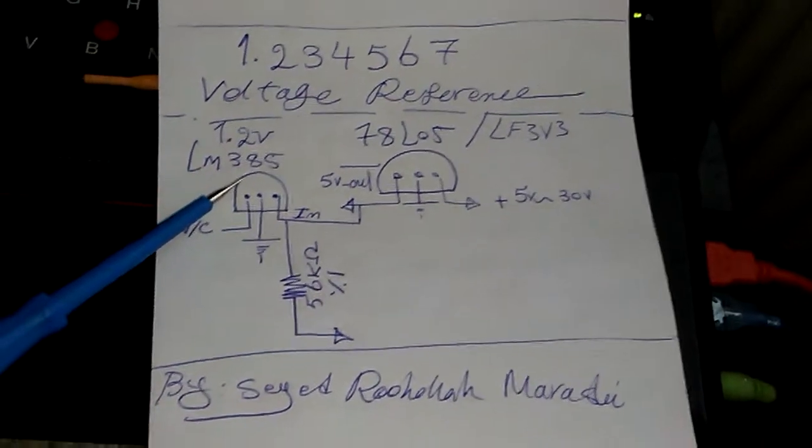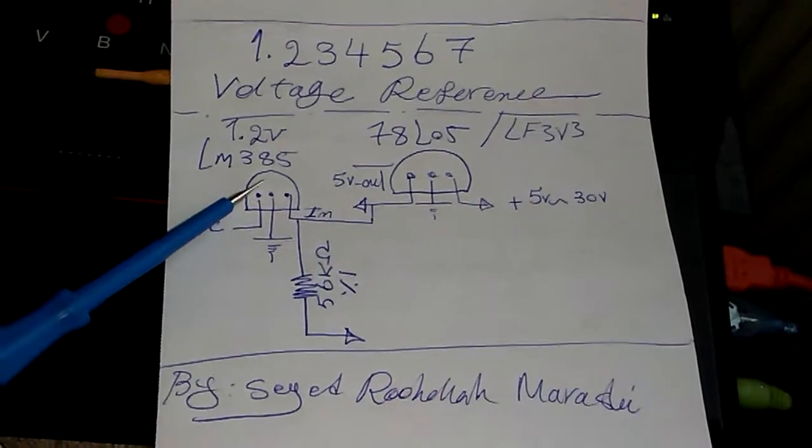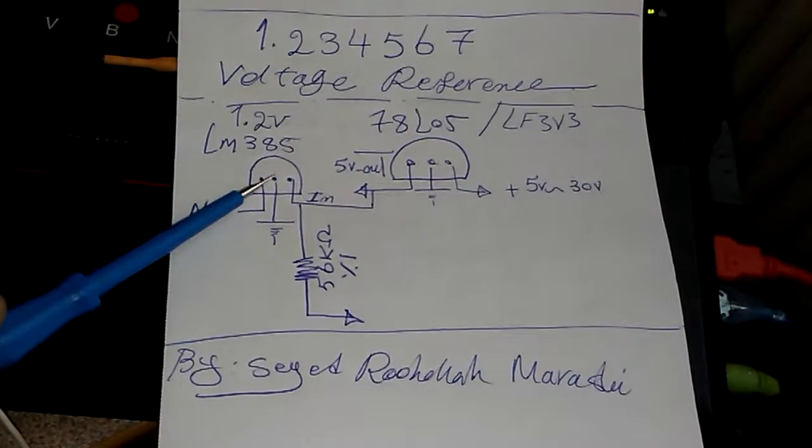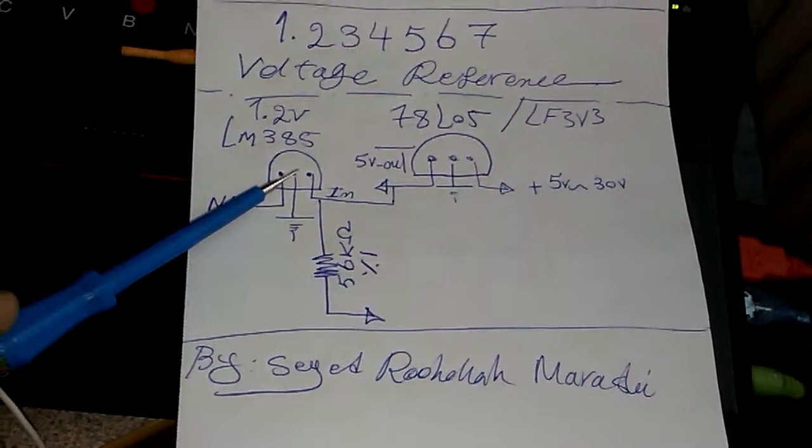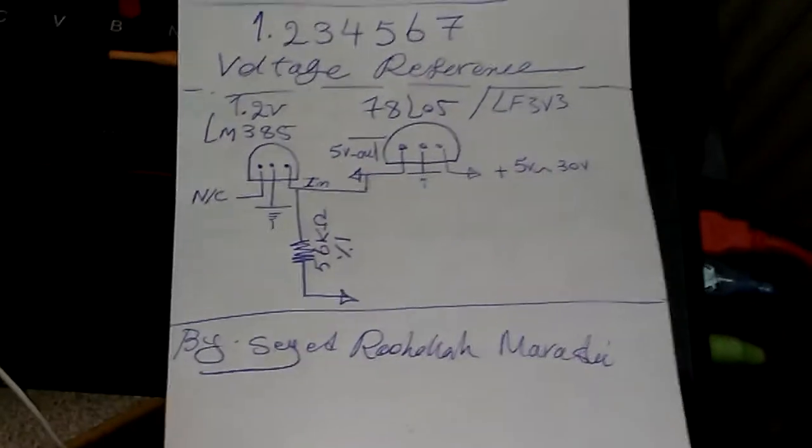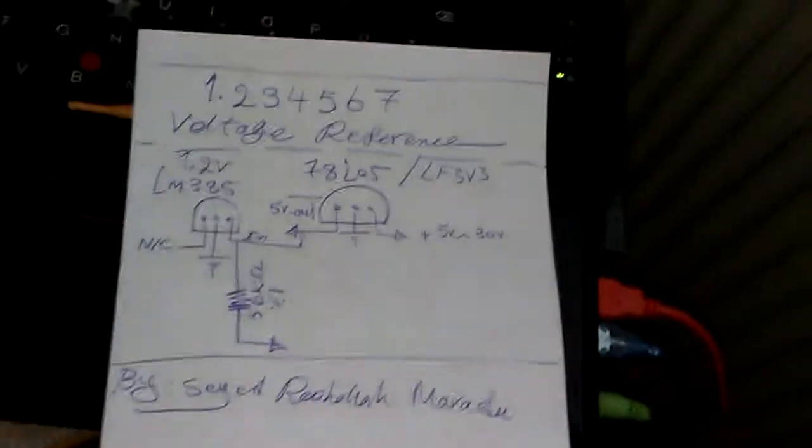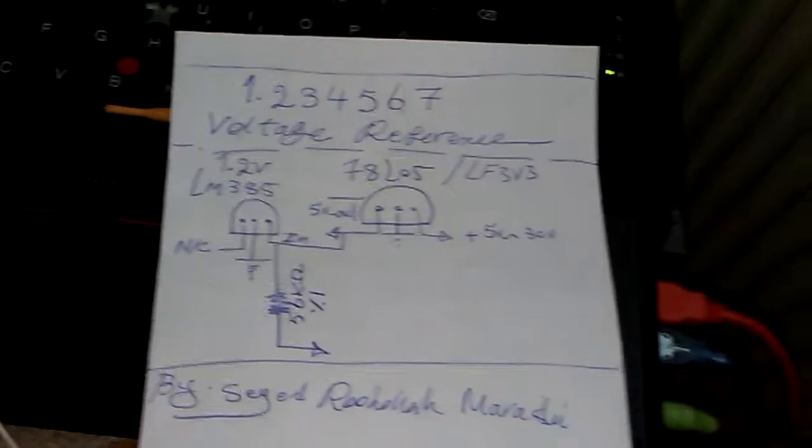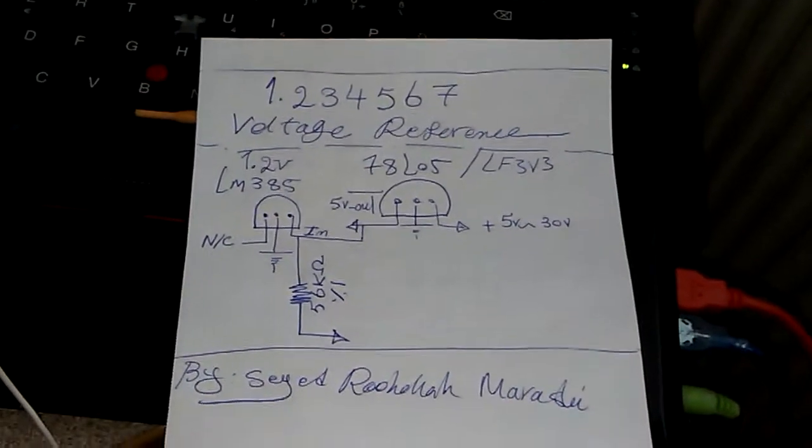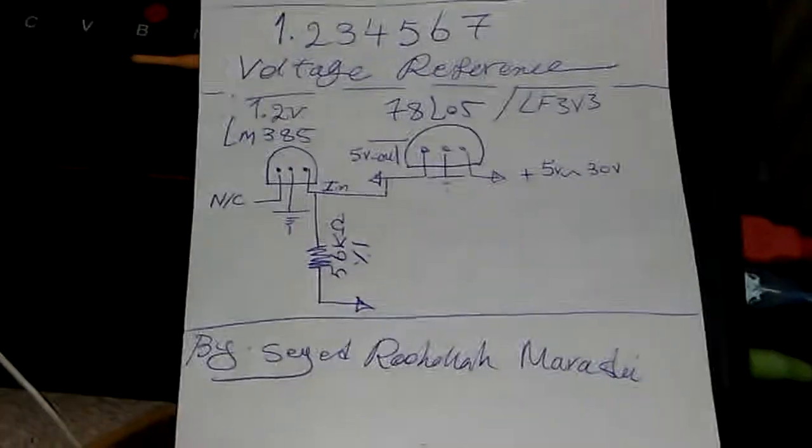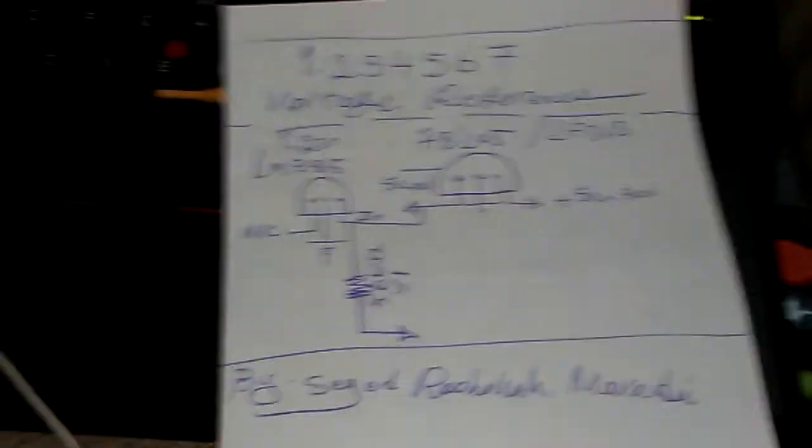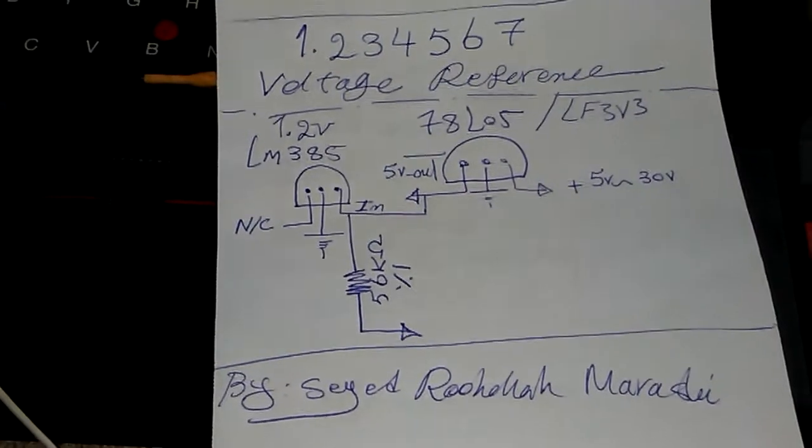The LM385 works as a diode but is very stable with high precision output. With high quality multimeters, you're able to calculate the value up to eight digits.